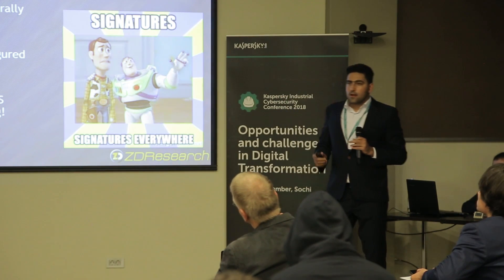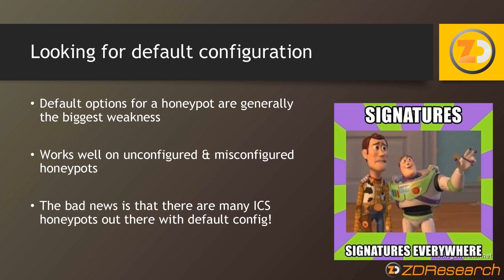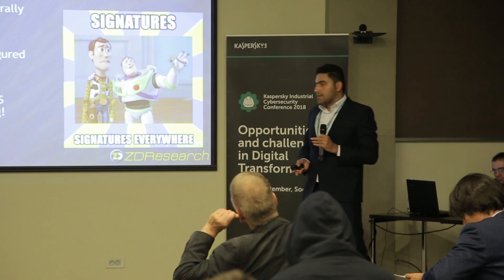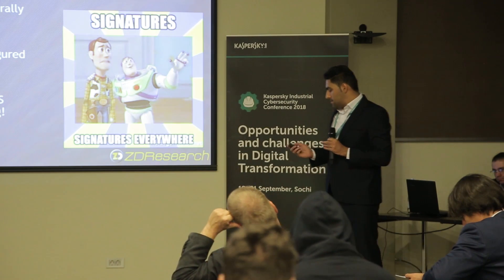The most common technique for fingerprinting honeypots is looking for default options and default values, which can be easily detected by looking at network service banners or response values.